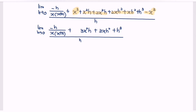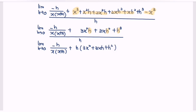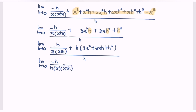My suggestion is to factorize h from the cubic expansion part. Rewrite: limit as h approaches zero of negative h over x(x plus h), plus h multiplied by (3x squared plus 3xh plus h squared), all over h. Kindly split the expression into two separate limits: limit as h approaches zero of negative h over h multiplied by x(x plus h), plus limit as h approaches zero of h multiplied by (3x squared plus 3xh plus h squared) over h.